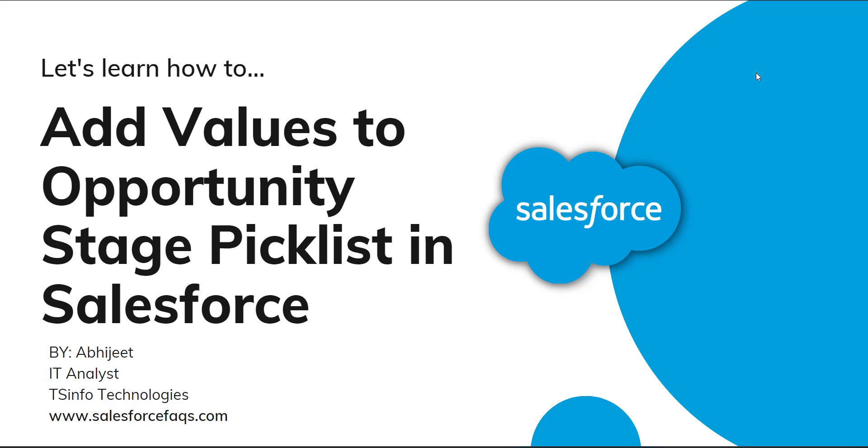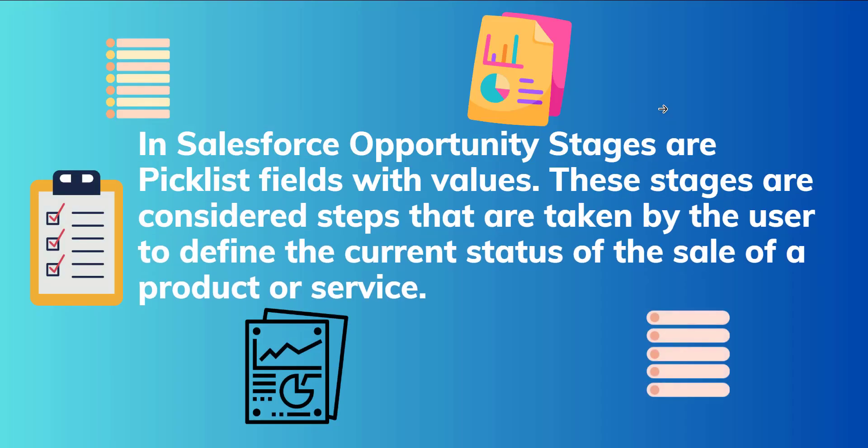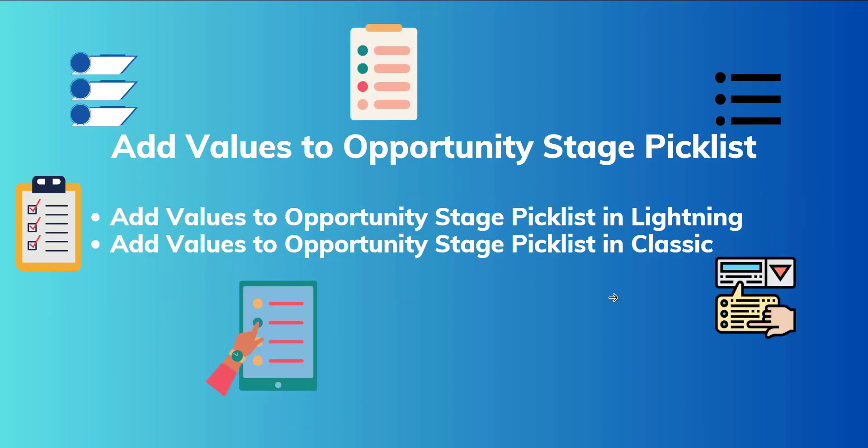Hello everyone, welcome to the channel. I am Abhijit and today in this video I will tell you how to add values to the opportunity stage picklist in Salesforce. In Salesforce, opportunity stage values are picklist fields with values. These stages are steps taken by the user to define the current status of the sales of a product or a service. Salesforce also has some inbuilt opportunity stage values like Prospecting, Qualification, Need Analysis, Closed Won, etc.